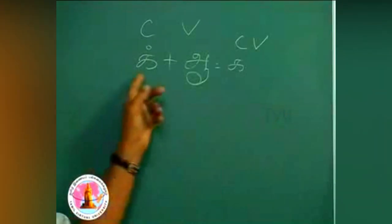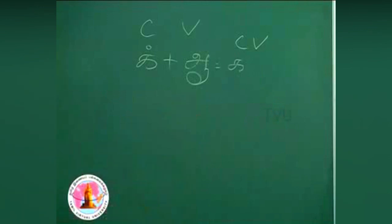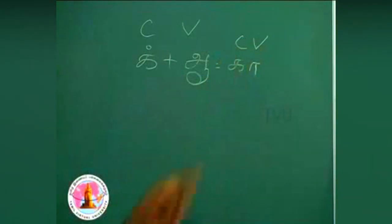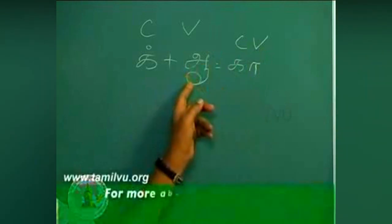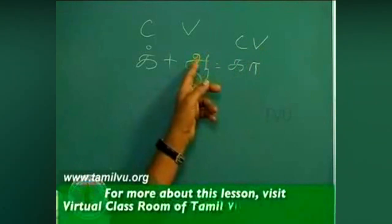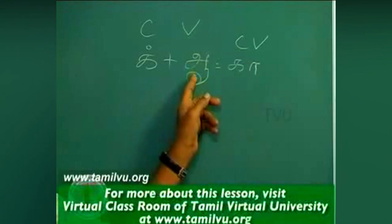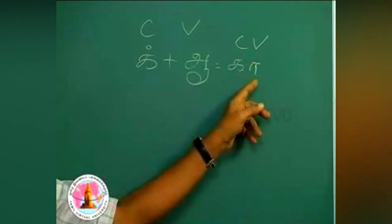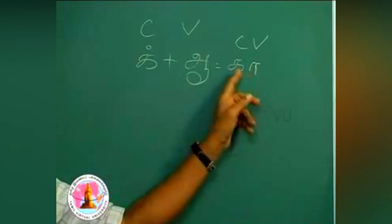K plus a became ka. This is elongated. Ā is an elongation of a, so naturally the consonant vowel gets an elongated sound kā.